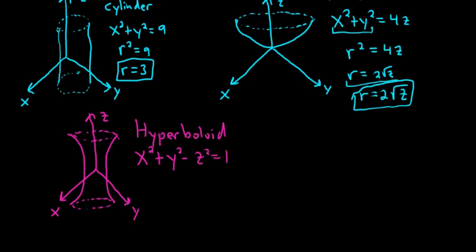This is x² + y² - z² = 1 in rectangular coordinates. You see that this is r², so this is r² - z² = 1, or r² = z² + 1. So very simple equation for a hyperboloid in cylindrical.